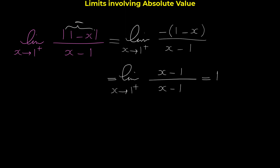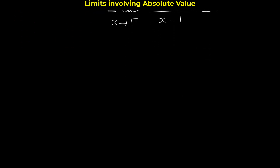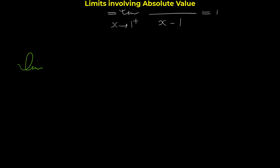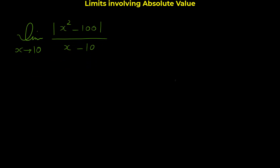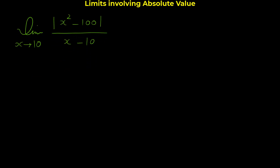So the limit of |1-x|/(x-1) as x approaches 1 from the right equals 1. Let me show you one more example: the limit of |x²-100|/(x-10) as x approaches 10.